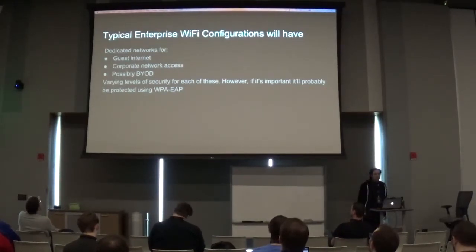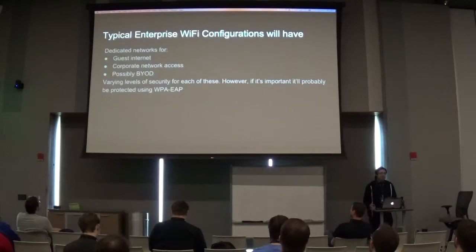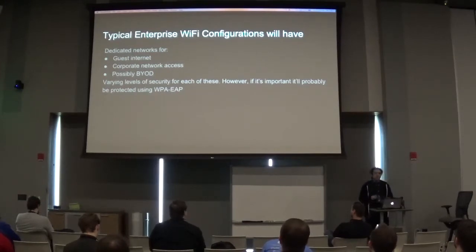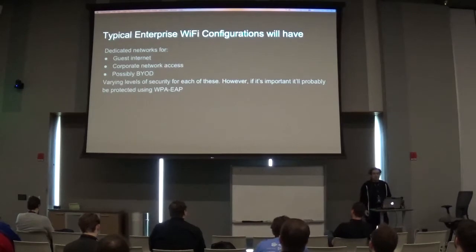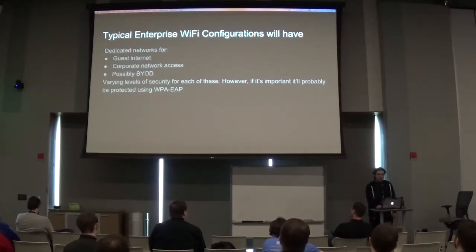The corporate WiFi is usually locked down using WPA-EAP. Unlike pre-shared key WPA where you just enter a password, EAP provides a username and password combination, which actually provides encryption on a user-by-user basis. Once you get above around 15-20 users, you need a situation where everyone has their own encryption key, which is why they use EAP for corporate WiFi.